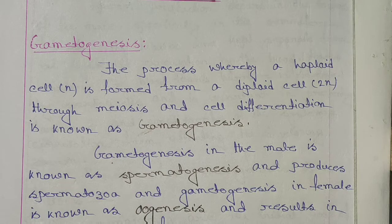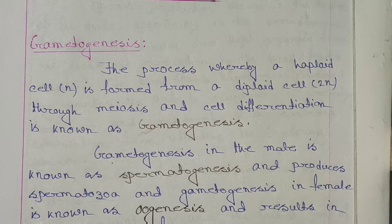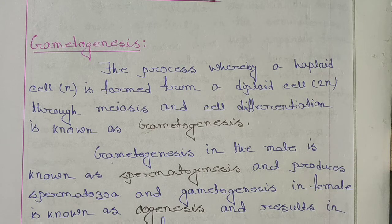That means, a diploid cell se haploid cells produce hone ka jo process hota hai, usi ko ham gametogenesis kehte hai. Ye jo gametogenesis prakriya hoti hai, woh meiosis cell division ki madad se sampann hoti hai.